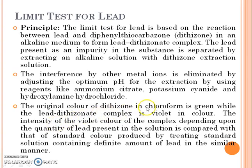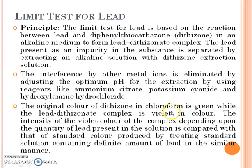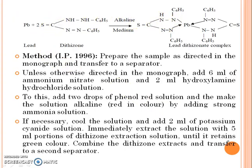The original color of dithizone in chloroform is green, while the lead dithizonate complex is violet in color. The intensity of the violet color, depending upon the quantity of lead present, is compared with that of a standard color produced by treating a standard solution containing a definite amount of lead in the same manner. So if the color produced is violet, the test sample will fail. The lead reacts with dithizone in alkaline medium to form the lead dithizonate complex.